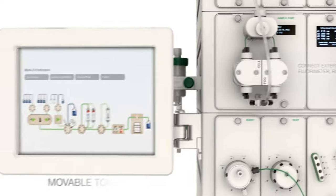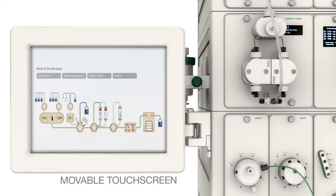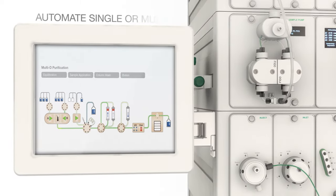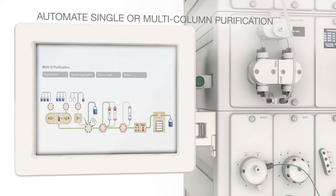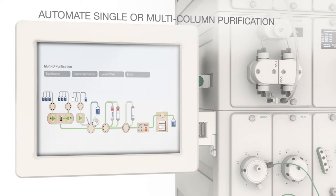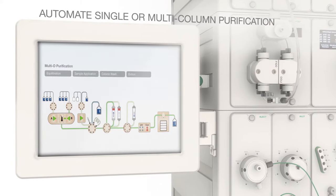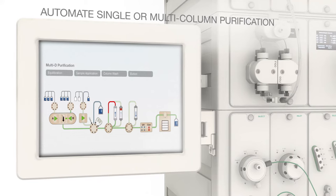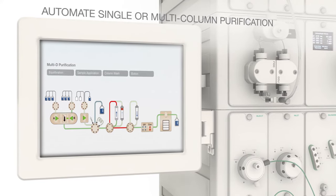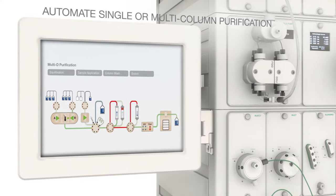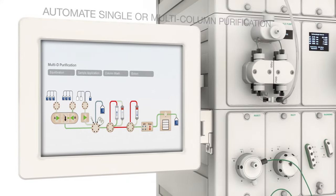An onboard touch screen provides manual control. With the NGC system, automate single or multi-column purifications for increased reproducibility and minimized sample loss. For example, capture your monoclonal antibodies on an affinity column followed by a desalting column.